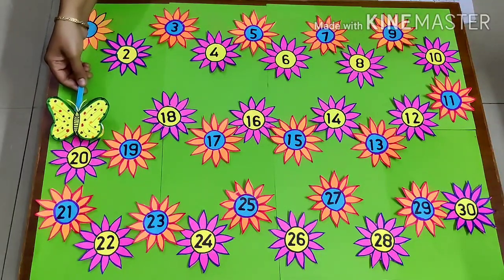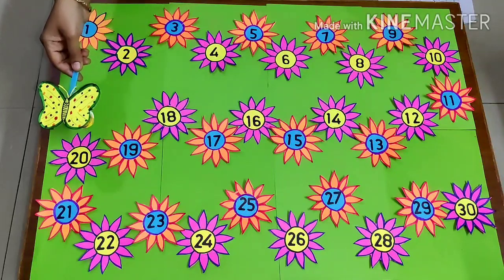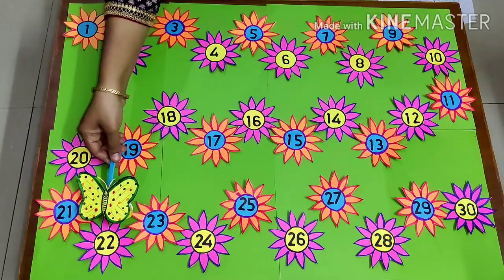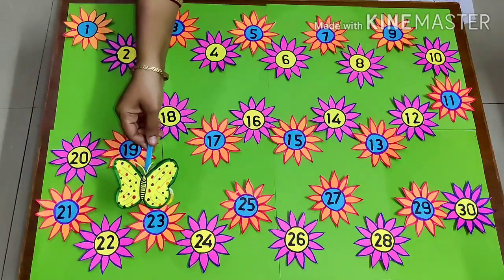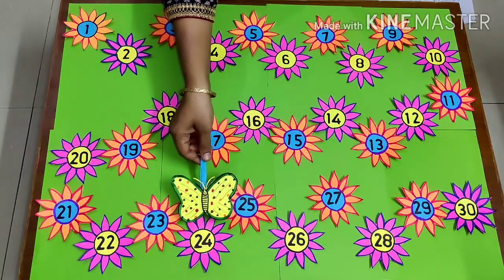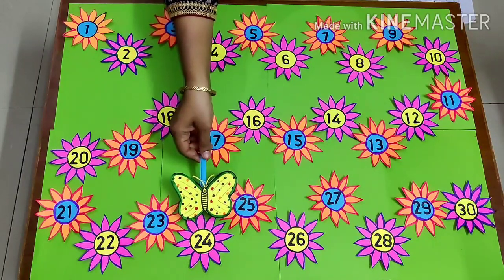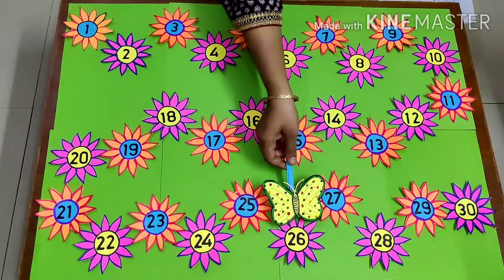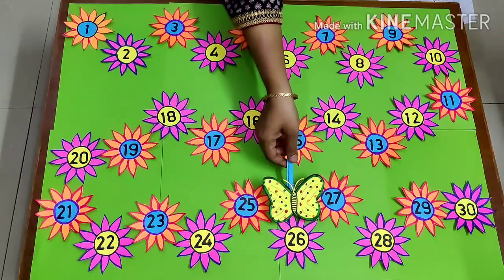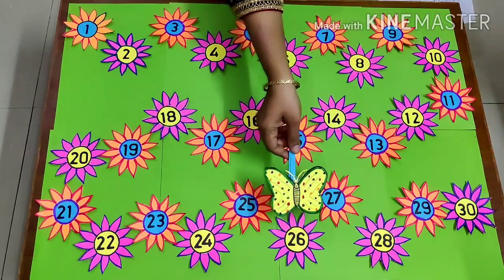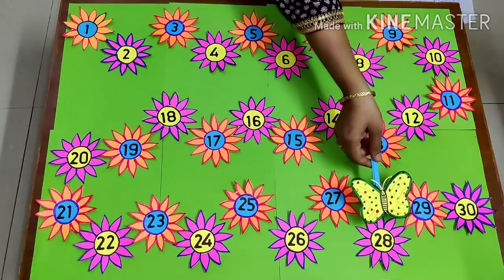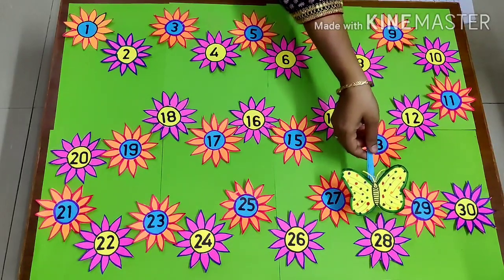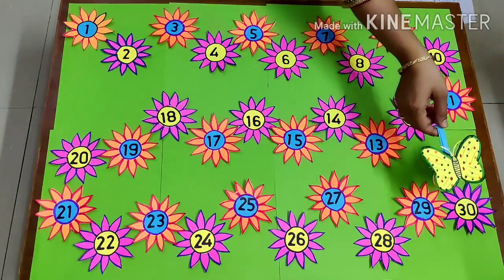From flower number 20, it again flies to flower number 22. Now it flies to flower number 24. From flower number 24, it moves to flower number 26. From flower number 26, it flies to flower number 28. From flower number 28, it moves to flower number 30.